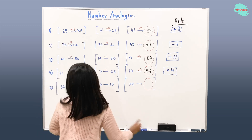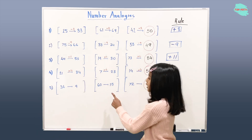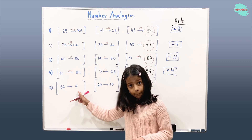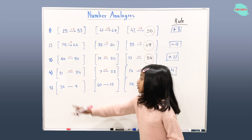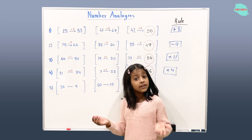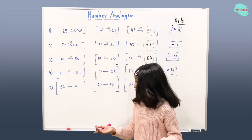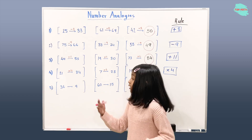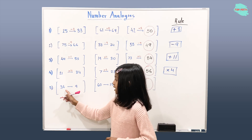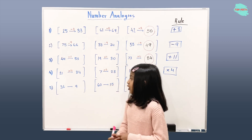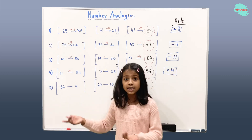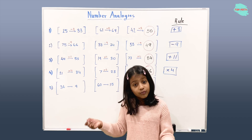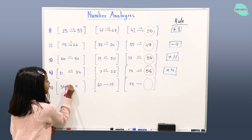Let's solve the fifth example. We have three different groups. Here, if you see, this is a big number and this is a small number, so it's decreasing. It could either be subtraction or division, but it can't be subtraction because it looks way too small. So let's try division: 36 divided by some number gives us 9. So 9 times something gives us 36 — if you remember the multiplication table, it's 4. So we'll do divided by 4.